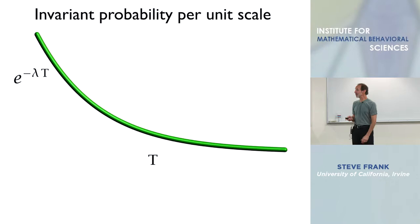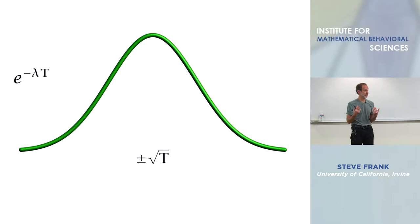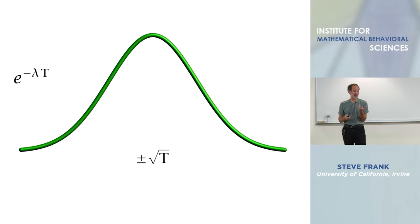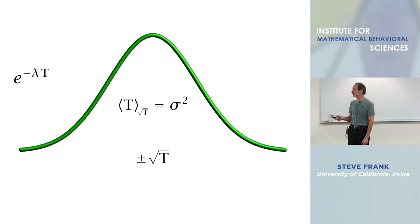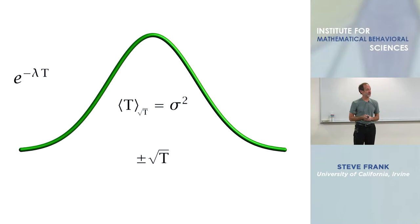If we draw the same distribution using the square root of T on the x-axis, we get a normal distribution. So e to the minus lambda T, plus or minus the square root of T, gives a Gaussian or normal distribution. We can do this for essentially any continuous distribution, revealing the deep unifying underlying structure of probability patterns — if we can understand what T means. The average value of T on the scale of the square root of T is a generalized notion of variance, which applies to any distribution. It describes the average Euclidean distance of fluctuations from the peak, giving a simpler and more powerful way of interpreting all those different forms of probability distributions.